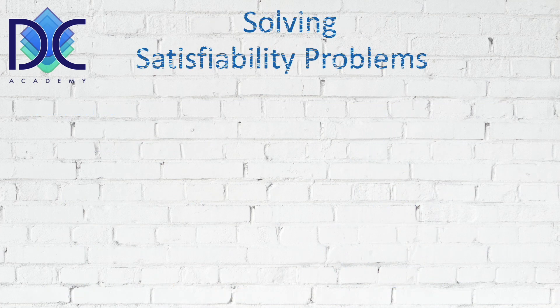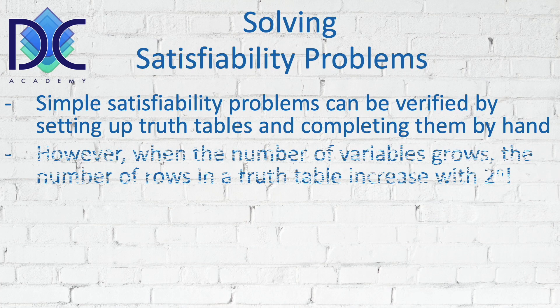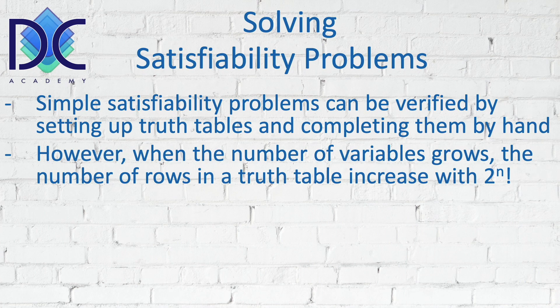Solving satisfiability problems can become very complex. We can set up truth tables and complete them by hand, but as we get more variables the number of rows increases as 2 to the power n. With only P we have 2¹ = 2 rows; with two propositions, 2² = 4; with three propositions P, Q, and R, we already have 8 rows.